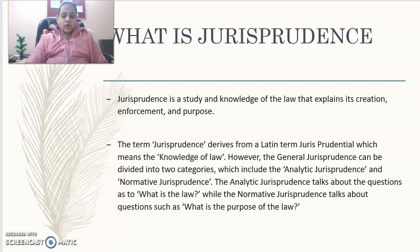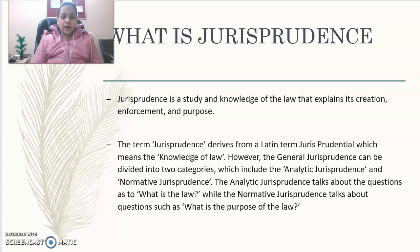The term jurisprudence is derived from the Latin term 'jurisprudentia', meaning knowledge of law. In order to understand jurisprudence and its theories, it is important to understand that it has been categorized into two heads: analytical jurisprudence, which talks about what the law is, and normative jurisprudence, which discusses the purposes of law. These two categories help the learner understand why law has been enacted, what has been the purpose behind its implementation, and what role law plays under different legal systems.